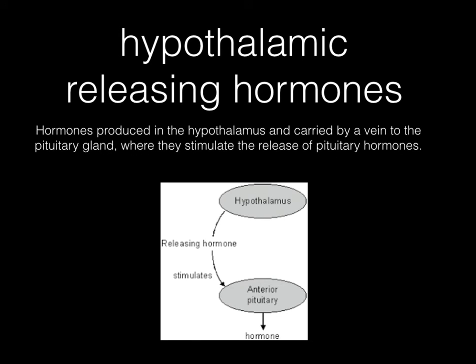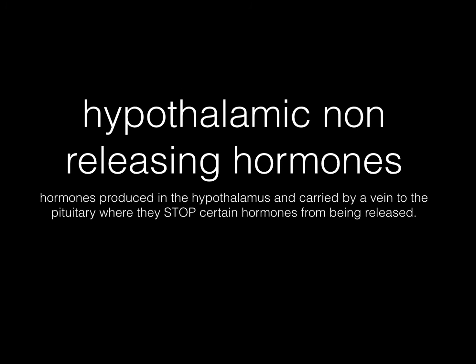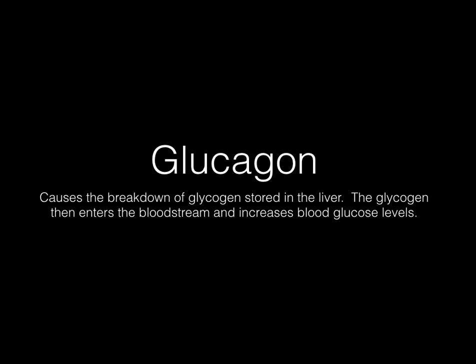Hypothalamic releasing hormones are hormones produced in the hypothalamus and carried by a vein to the pituitary gland, where they stimulate the release of pituitary hormones. The opposite — hypothalamic non-releasing hormones — stimulate the pituitary to stop certain hormones from being released. Glucagon causes a breakdown of glycogen stored in the liver; the glucagon then enters the bloodstream and increases blood glucose levels, which affects insulin and our blood glucose levels in general.